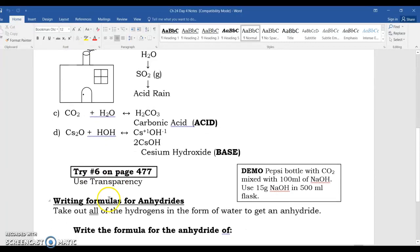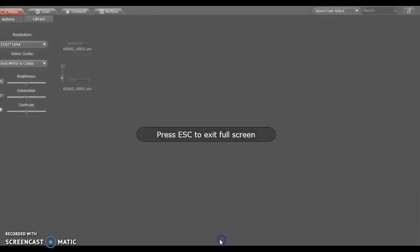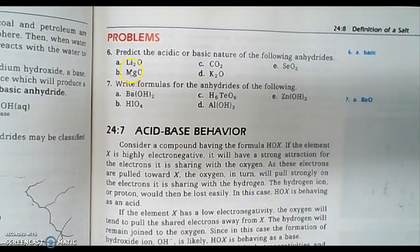So look at number 6 right up here, and it says predict the acidic or basic nature of the following anhydrides. This is the homework, 6A through E. I want you to work on this in class. It says lithium Li2O. Remember, oxygen has a negative 2 and lithium has a plus 1, therefore it's balanced out with two of them. For metallic oxides, predict the acidic or basic nature.